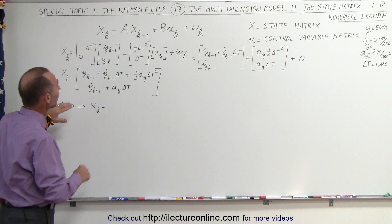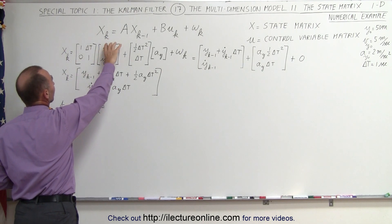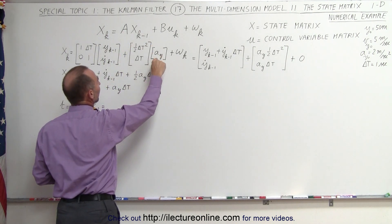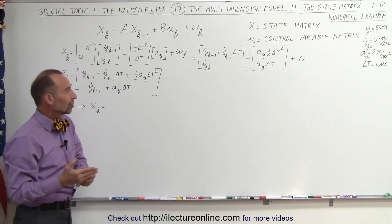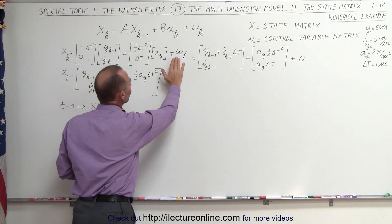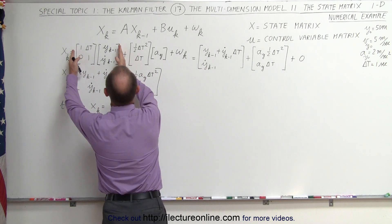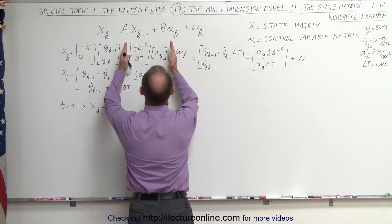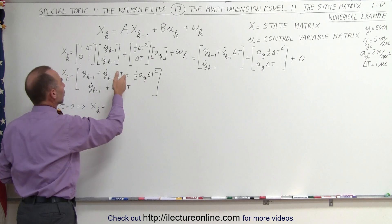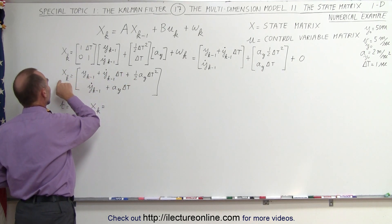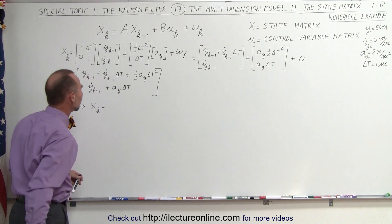Let's look at the matrix again. The current state matrix is equal to the A matrix multiplied times the previous state, plus the B matrix multiplied times the control matrix. This has the control variables — in this case there's only one variable, the acceleration in the Y direction. We're going to assume that the noise at this point is 0 to make it simple. When we multiply these two together we get one vector, and when we multiply these two together we get that vector. Add them together — this is the matrix that tells us what the current state is relative to the previous state.